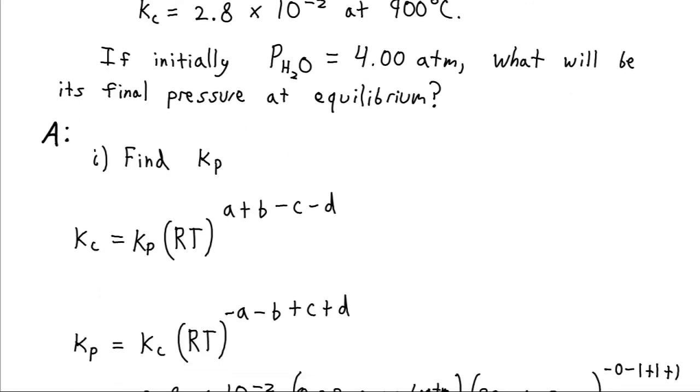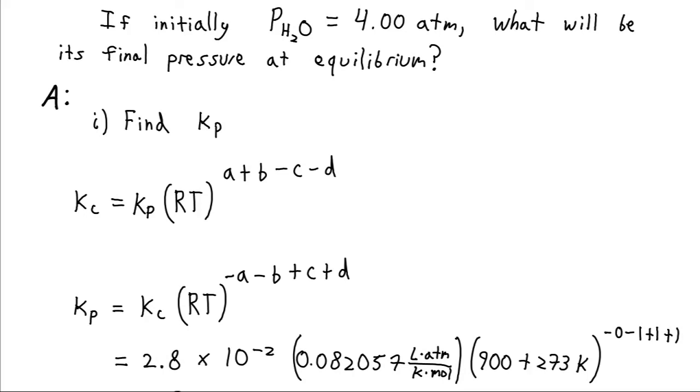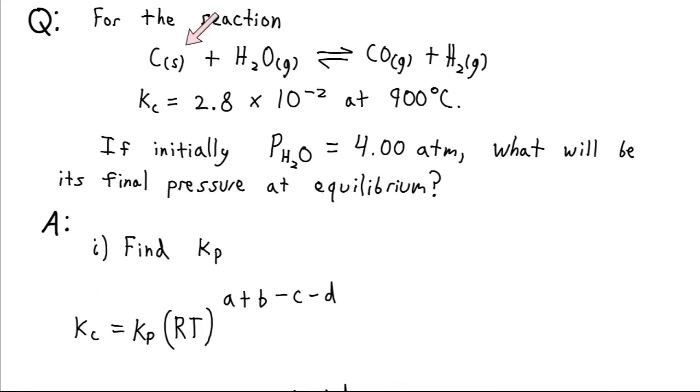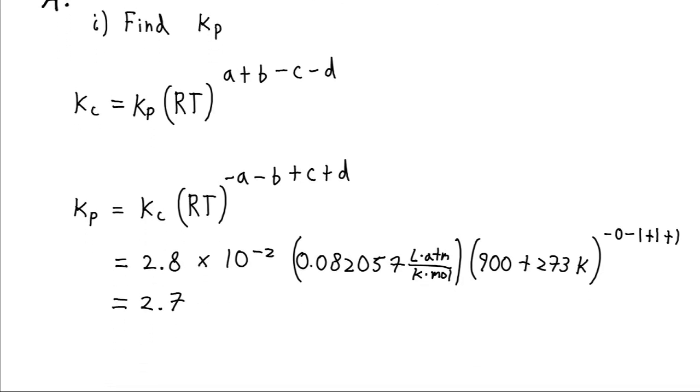So now if we solve for Kp, so I take this whole term and divide it over onto the Kc side, that will change the signs of all these coefficients. And now just plugging in the values we have, we're going to want to use the version of R that has liters and atmospheres in it. We have our equilibrium constant times R times the temperature in Kelvins raised to the power of all the coefficients here. This is 1, but we call it 0 because it's a solid. This is 1, this is 1, this is 1.